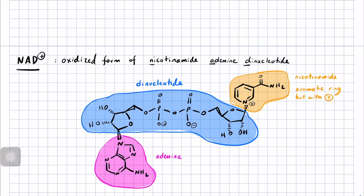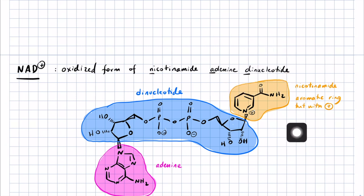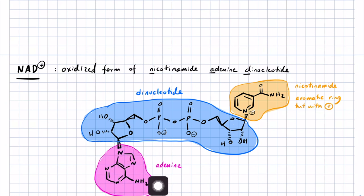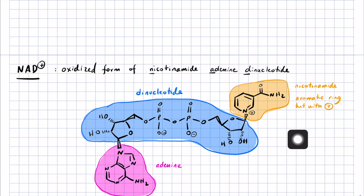Let's talk about some redox reagents now. NAD+ is the oxidized form of nicotinamide adenine dinucleotide. Nicotinamide is the portion circled in orange, adenine is the portion in pink. In between the two you have a ribose ring attached to nicotinamide, a ribose ring attached to adenine, and the two are linked together by a pyrophosphate group. We call this a dinucleotide because you've got nicotinamide monophosphate and adenine monophosphate linked together via a phosphoanhydride bond. The business end of the molecule is the nicotinamide portion.